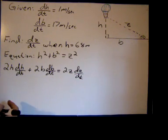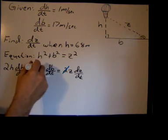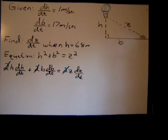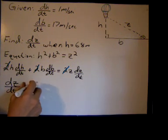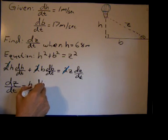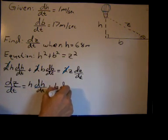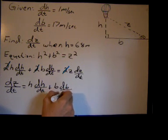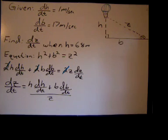And we get 2H dH/dt plus 2B dB/dt equals 2Z dZ/dt. We want to solve for dZ/dt. Also, there's a common factor of 2 across the board here, so we can get rid of those right now to make our lives simpler. So dZ/dt equals H dH/dt plus B dB/dt all over Z.